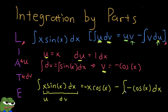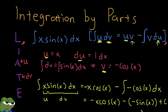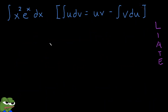The remaining integral is the integral of negative cos(x) dx. Evaluating gives negative x·cos(x), and the anti-derivative of negative cos(x) is negative sin(x), so with the double negative that becomes a plus. The final answer is negative x·cos(x) plus sin(x) plus C.